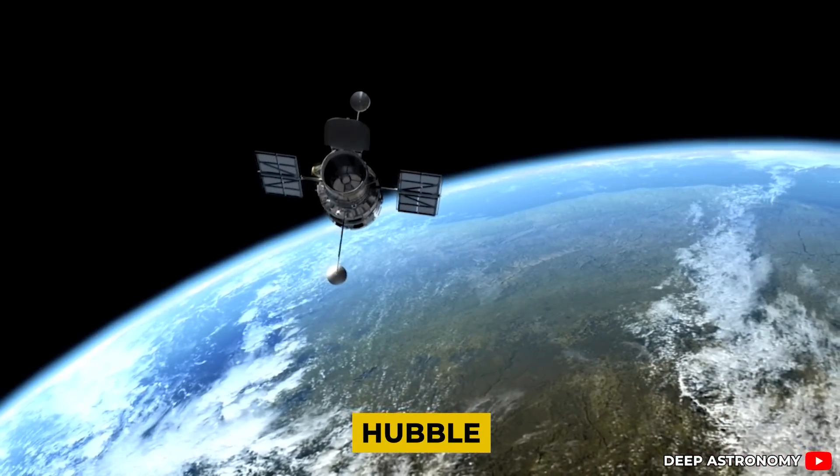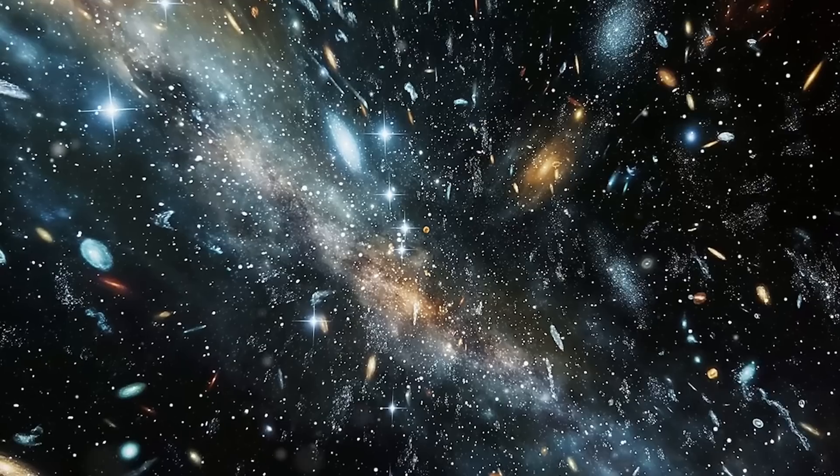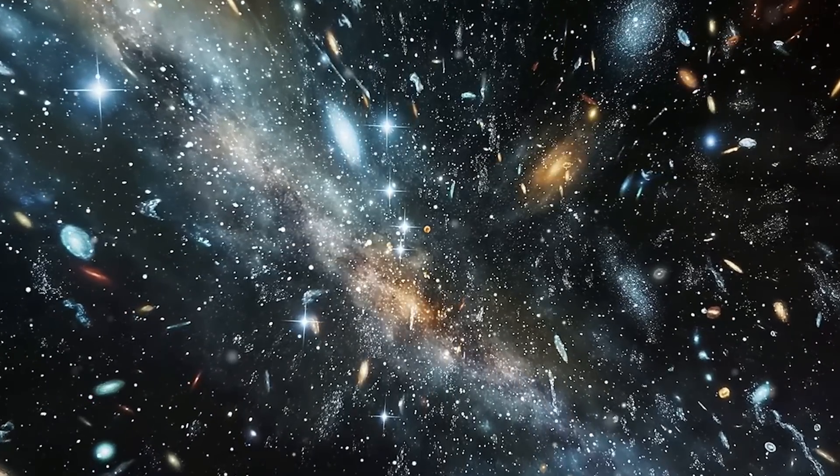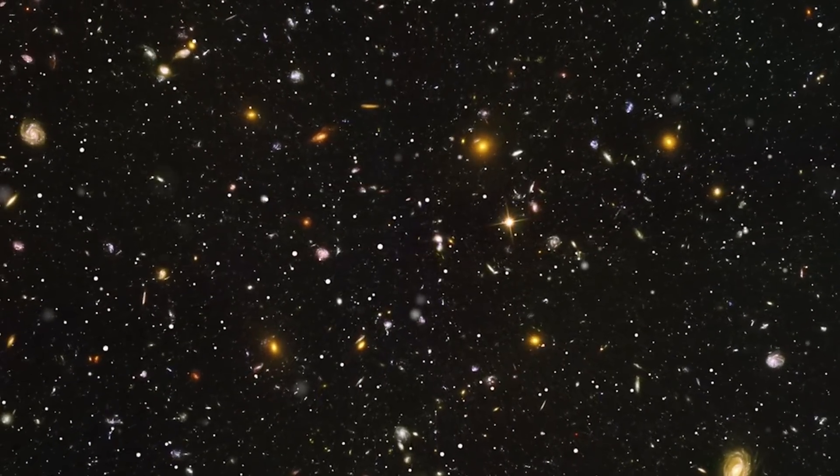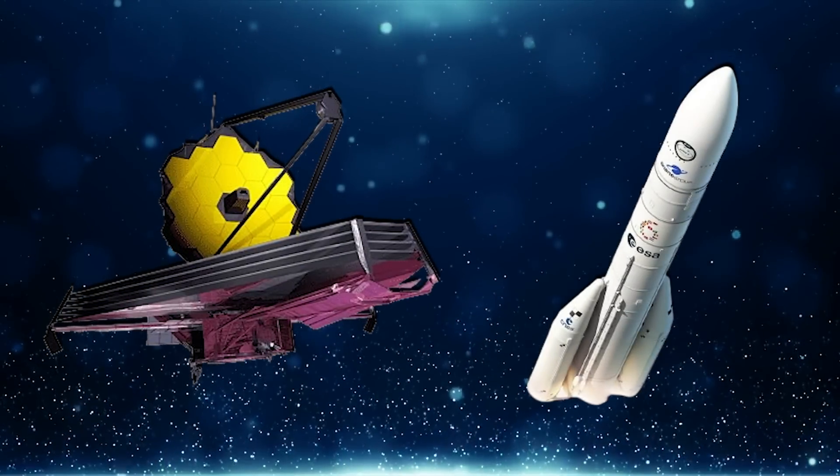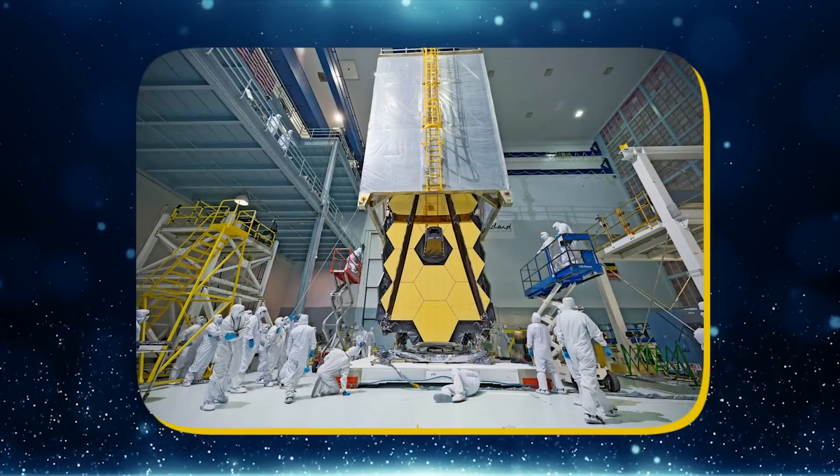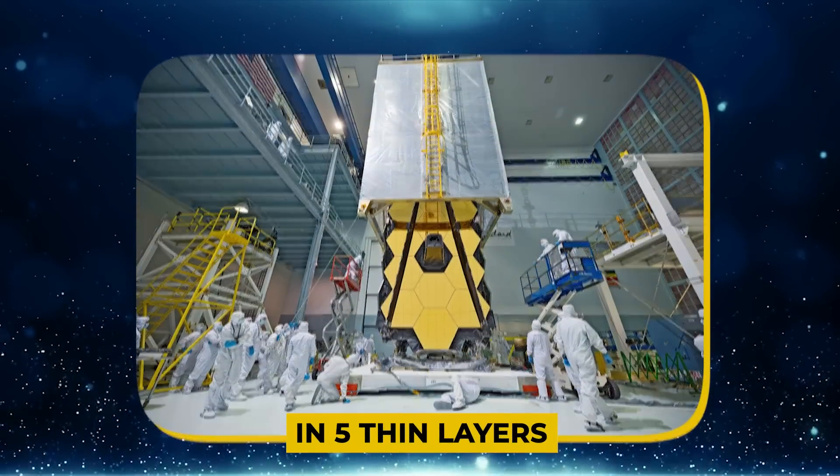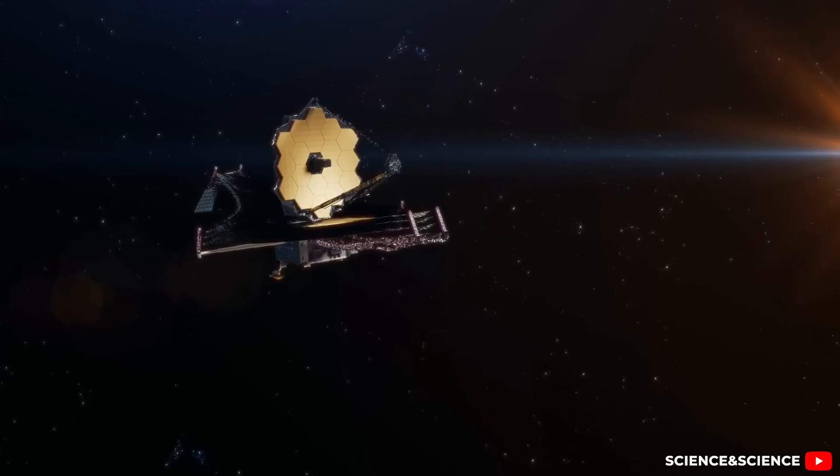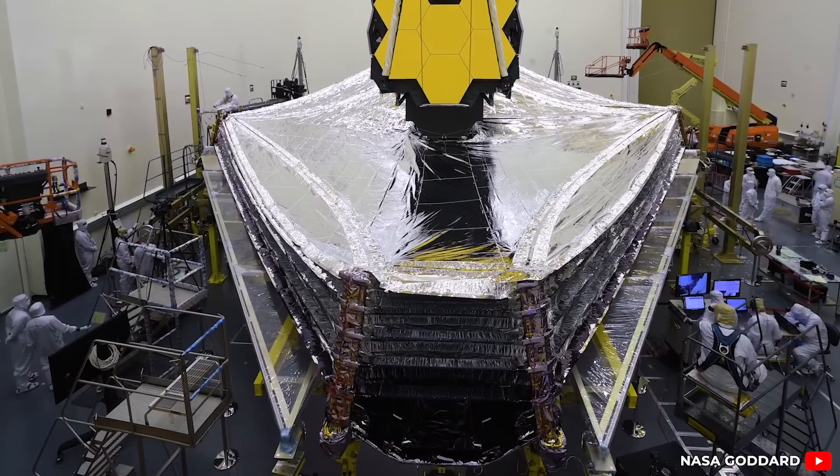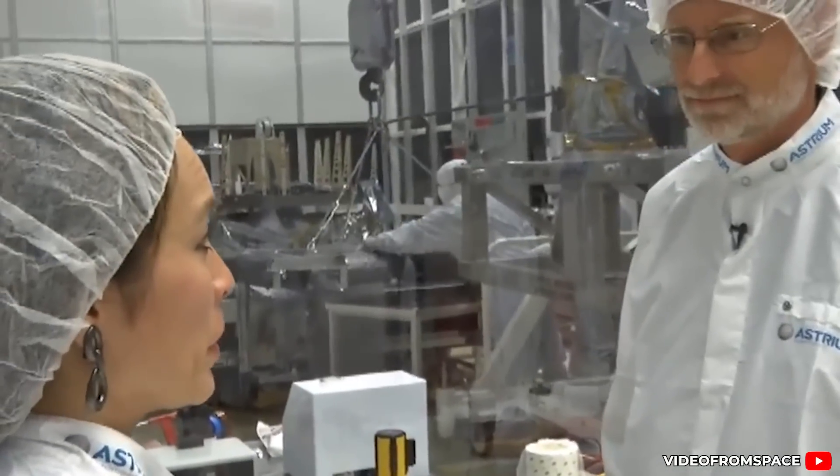Unlike Hubble, which had been our window to the universe for more than 30 years, Webb was built to look even deeper. But getting it there wasn't the hard part. The real magic happened after liftoff. Webb was too big to fit into a rocket fully assembled, so it had to fold up like high-tech origami. Engineers designed its sunshield to spread out in five thin layers.